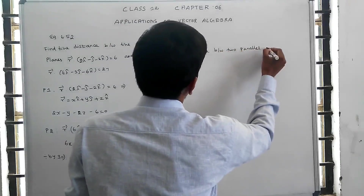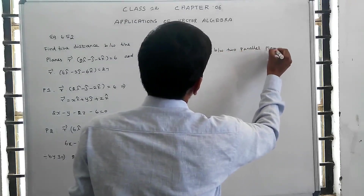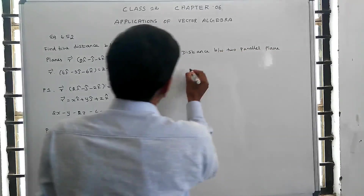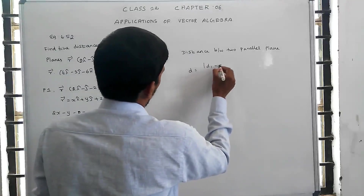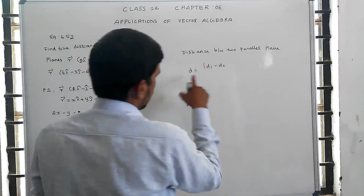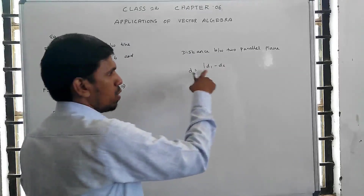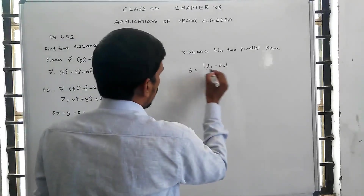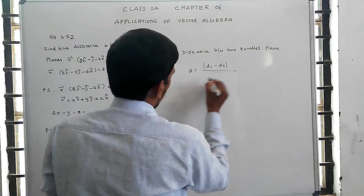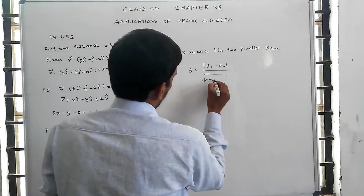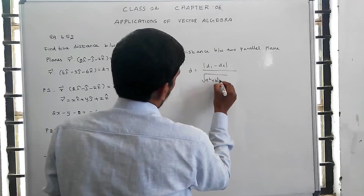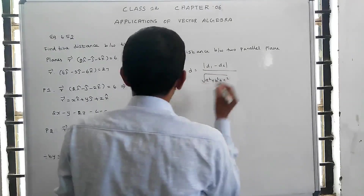Using the formula for distance between two parallel planes: D equals the modulus of D1 minus D2, divided by the square root of A squared plus B squared plus C squared.